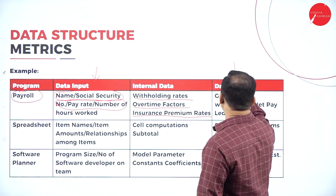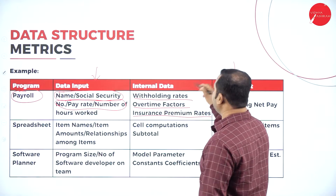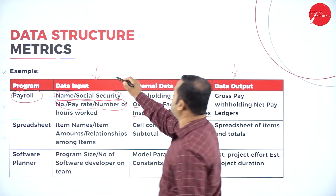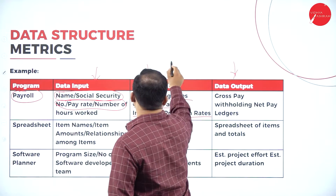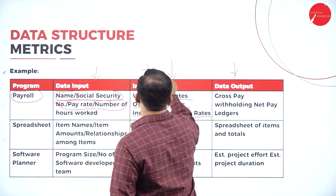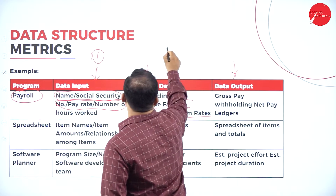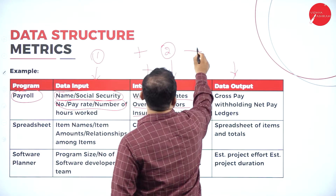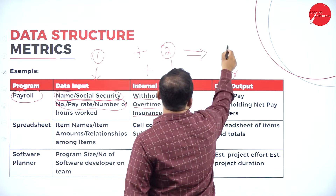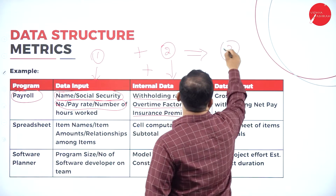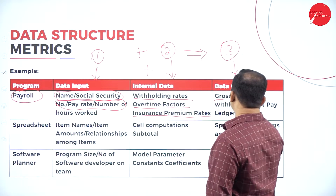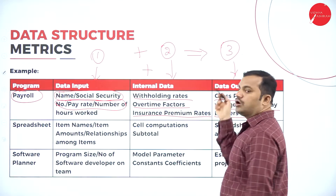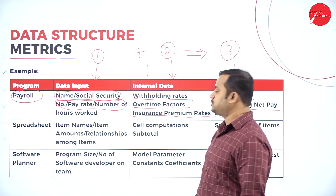What is the data produced by the processing? After processing, column 1 and column 2 are added to produce column 3. So we have gross pay, withholding, net pay, and ledgers — these are the outputs produced.